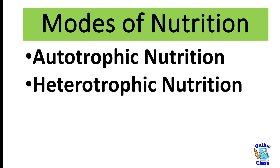So what are the modes of nutrition? Basically there are two types of nutrition. Number one: autotrophic nutrition. Number two: heterotrophic nutrition.